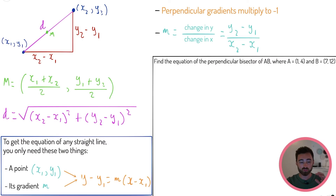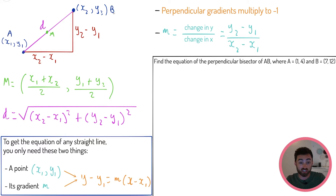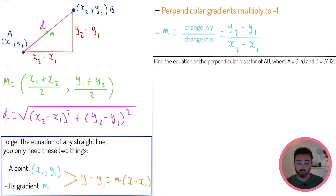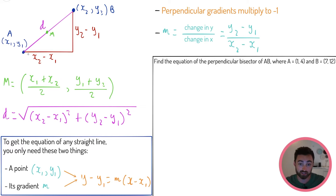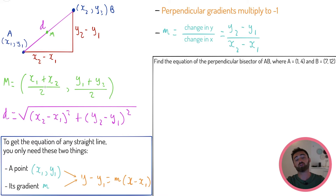The first thing I want to draw your attention to is: if we have two points A and B, what are different things we can do with them? First up — and you'll get asked about this a lot — is finding the midpoint of two points. All you need to do is find the average x coordinate and the average y coordinate. So the midpoint is (x1 + x2)/2 for x, and (y1 + y2)/2 for y. Simple.